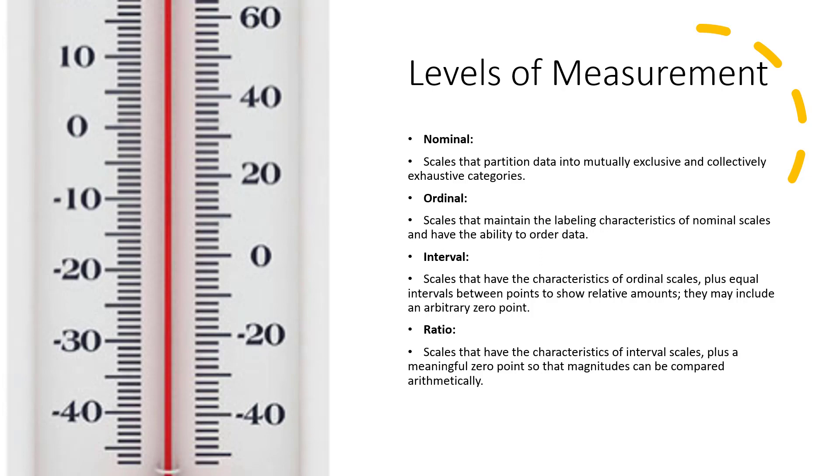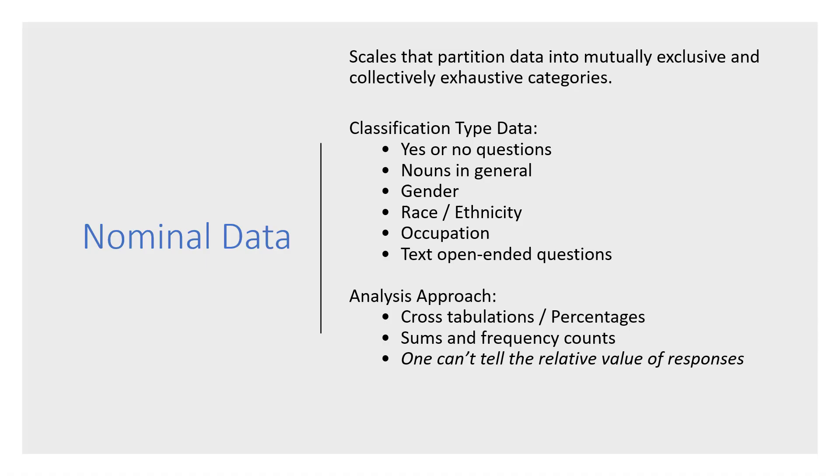The third level of measurement is called interval. Interval has the attributes of ordinal, but interval has the characteristics plus equal intervals between points to show relative amounts. They may include arbitrary zero point. Ratio is the most sophisticated type of measurement, has all the characteristics of interval scales plus a meaningful zero point, so that magnitudes can be compared arithmetically.